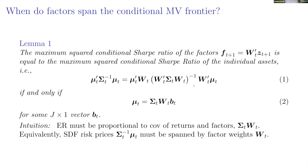The lemma tells us these are equal if and only if condition two is satisfied. Condition two intuitively links means to the covariance matrix, the weights W, and some vector of constants b-t. This tells us potentially how to construct the factors optimally, since W governs factor construction.